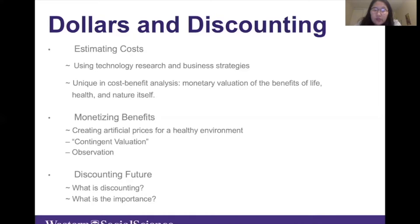The final step is discounting the future. Since costs and benefits of a policy often occur at different times — usually costs occur in the near future to prevent harm in the more remote future — future costs and benefits are discounted and treated as equivalent to smaller amounts in today's dollars. For example, at a 3% discount rate, $100 twenty years from now has a present value of only $55. Through discounting, the government can estimate the present value of future harms in order to take actions to prevent them.